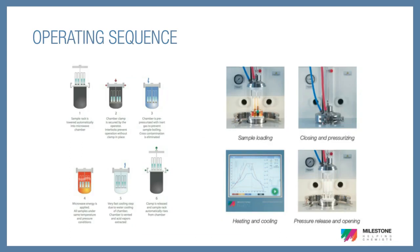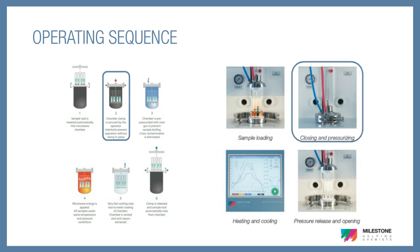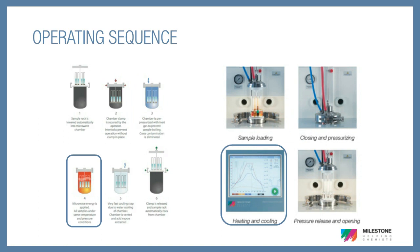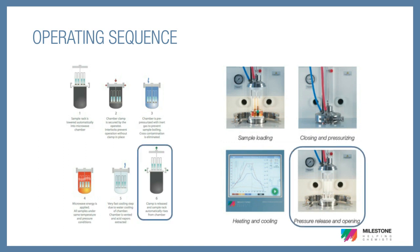Now let's take a closer look at the system's operating sequence. First, you weigh your samples into vials. This can be done directly on an analytical balance, add reagent, and place the loose-fitting cap onto the vial. Next, the rack is lowered into the reaction chamber containing the baseload. The system is clamped and pre-pressurized to 40 bar, which not only acts as a gas cap, but also prevents cross contamination between the samples. Next, the microwave program is started, and our samples are digested. Once the digestion program has completed, the Ultrawave will utilize a powerful external chiller, which accelerates the cooling process. Once the system has cooled to about 80°C, it will automatically depressurize. Once depressurized, we open the reaction chamber to remove our samples and put them onto the ICP or ICP-MS.